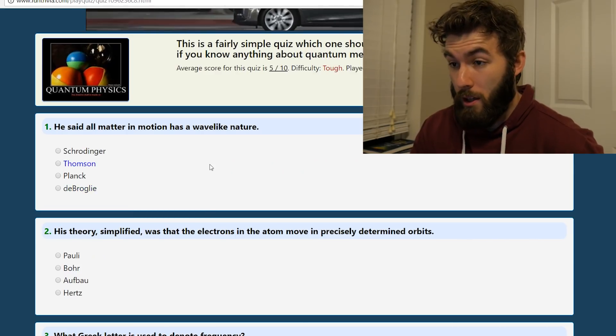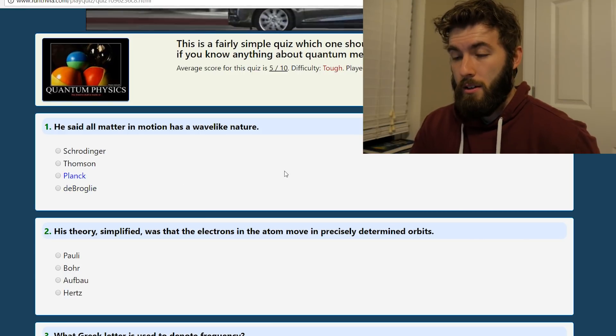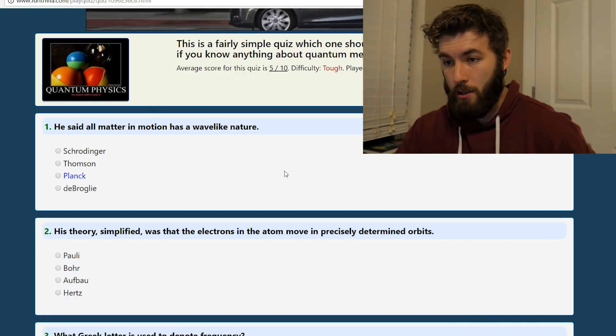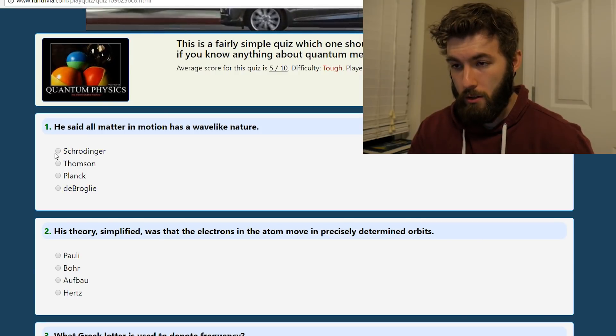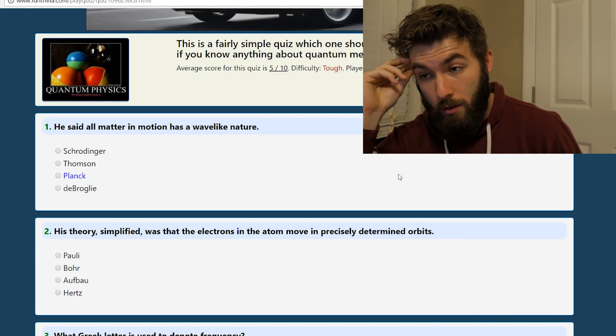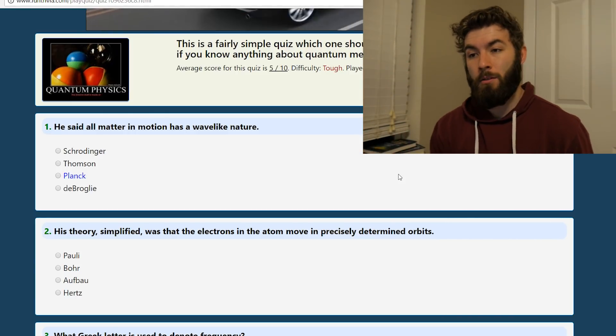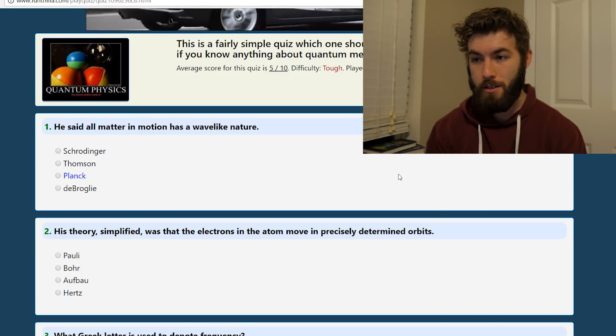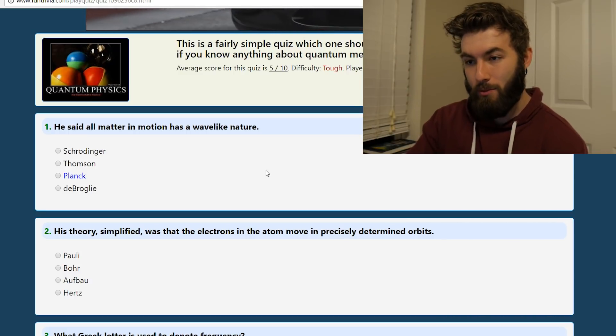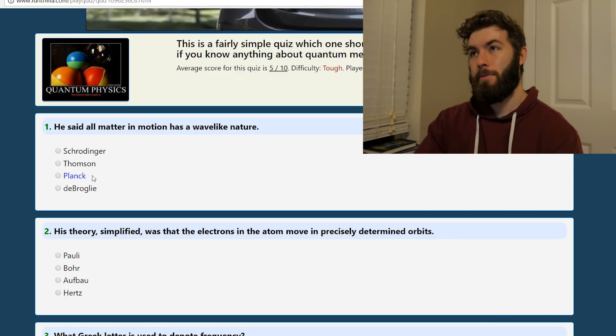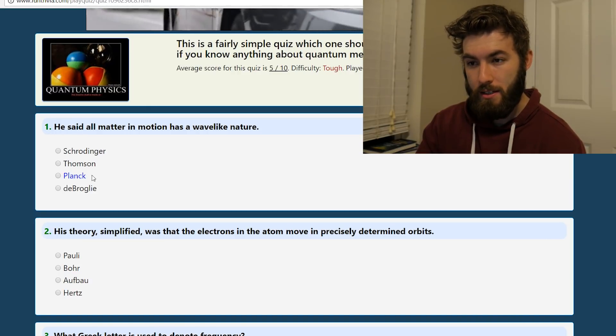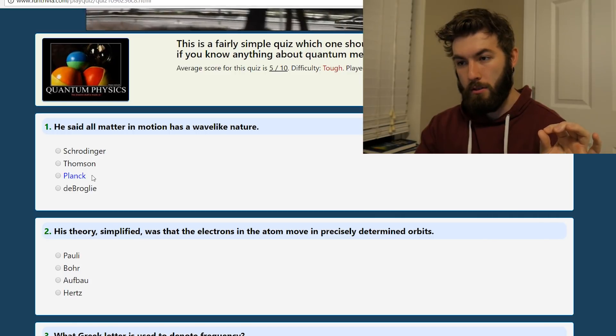He said all matter in motion has a wave-like nature. Oh boy. Thompson, that's the guy who discovered the electron, Planck, de Broglie, and Schrodinger. That's tricky because, alright, thought process. Brainstorm. Schrodinger, I mean his equation technically isn't a wave equation because it's only first order in time, so it's more like a diffusion equation. But it's called a wave function. But de Broglie kind of founded that whole pilot wave theory of quantum mechanics. So he was very team wave. I'm going to say de Broglie.